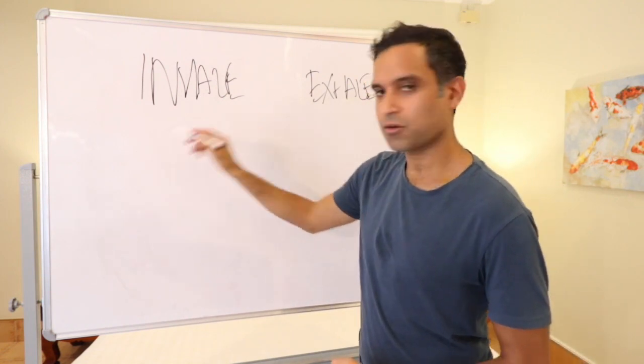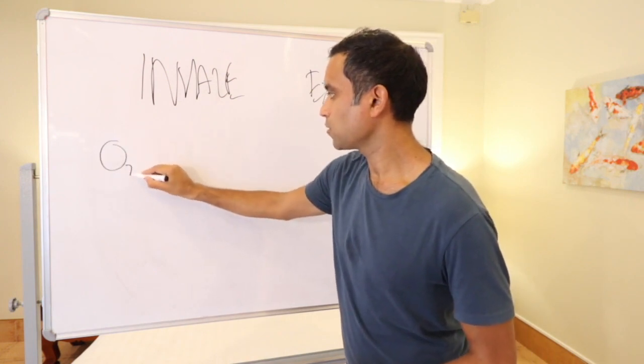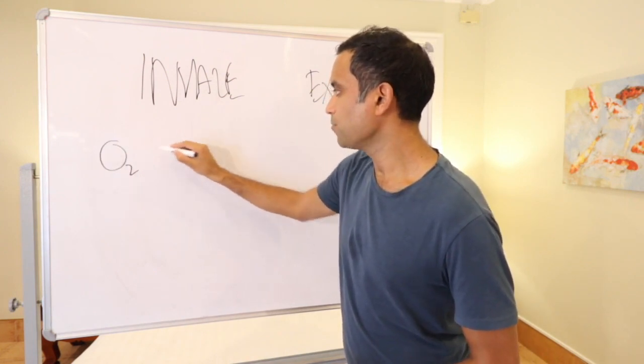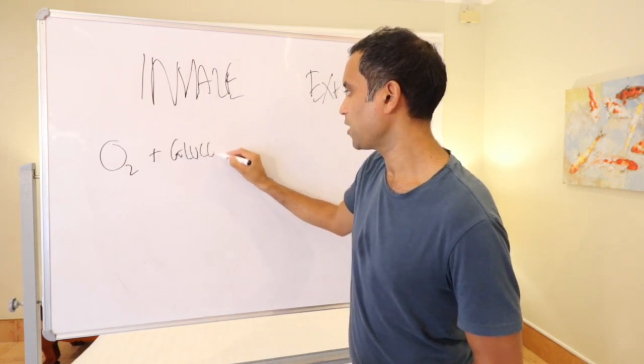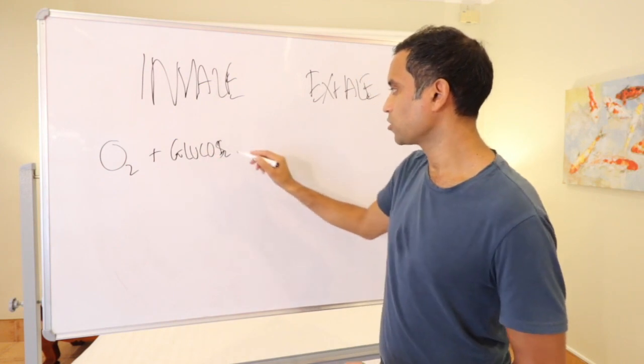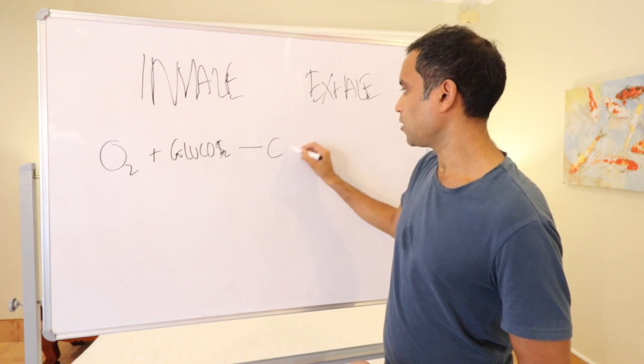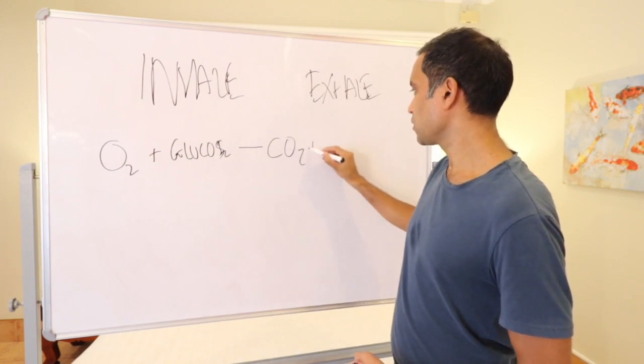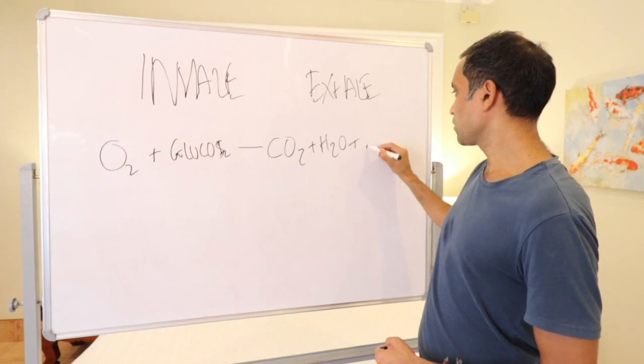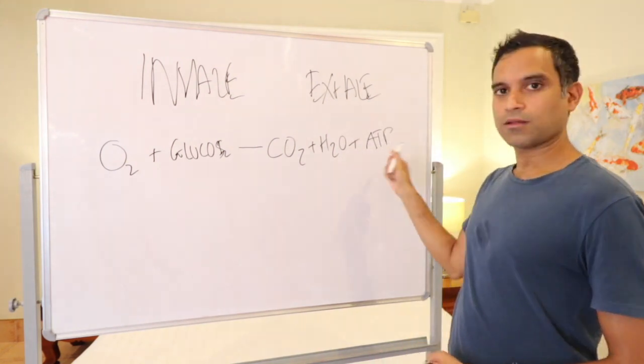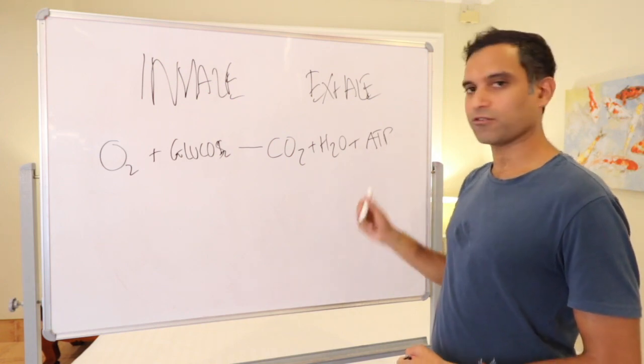So when we inhale, what happens? We take in oxygen, O2, and that combines in our cells in the mitochondria, little power packs in our cells, a battery with glucose to create carbon dioxide, water, and this very important molecule ATP, adenosine triphosphate.